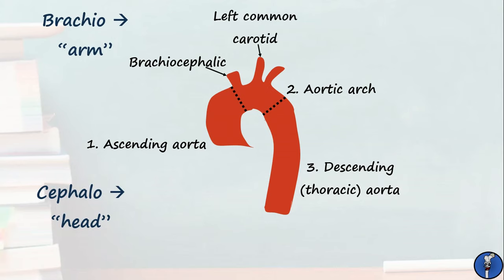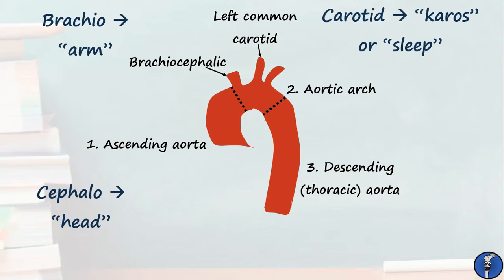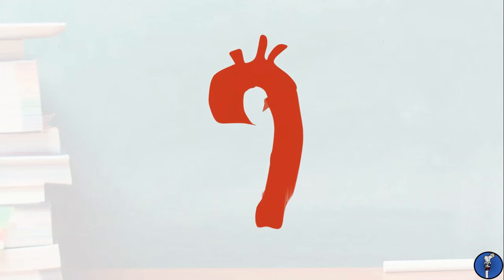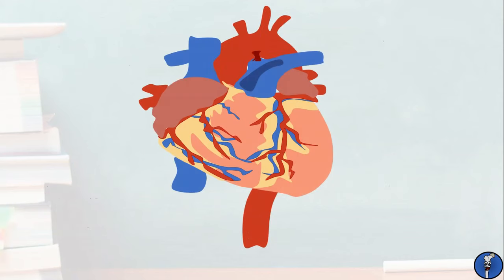Next, we have the left common carotid, which will supply the head and neck on the left side. This gets its name from the Greek root caros, which means sleep or stupor, deriving from the fact that blockage of this artery leads very quickly to loss of consciousness. Lastly, we have the left subclavian artery, which supplies the left arm. Here's a demonstration of how the aorta relates to the heart — see how its descending part passes posteriorly.